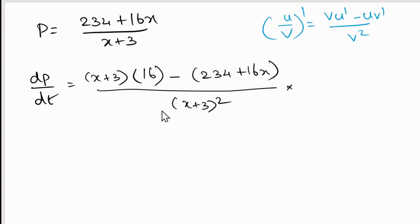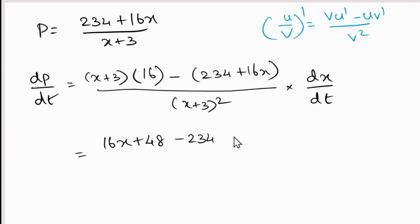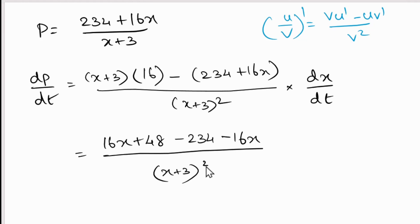Simplifying the numerator: 16(x + 3) - (234 + 16x) = 16x + 48 - 234 - 16x = -186. So dp/dt = (-186) / (x + 3)² × dx/dt.